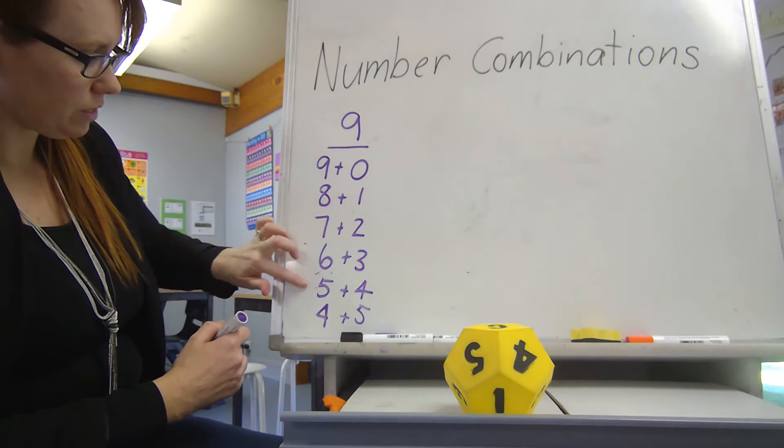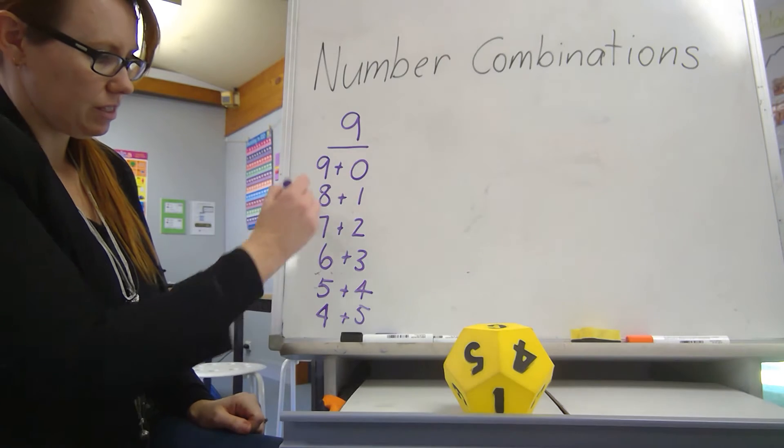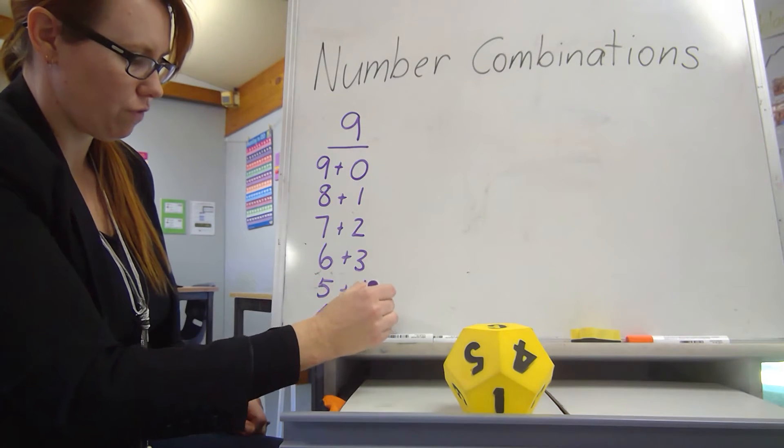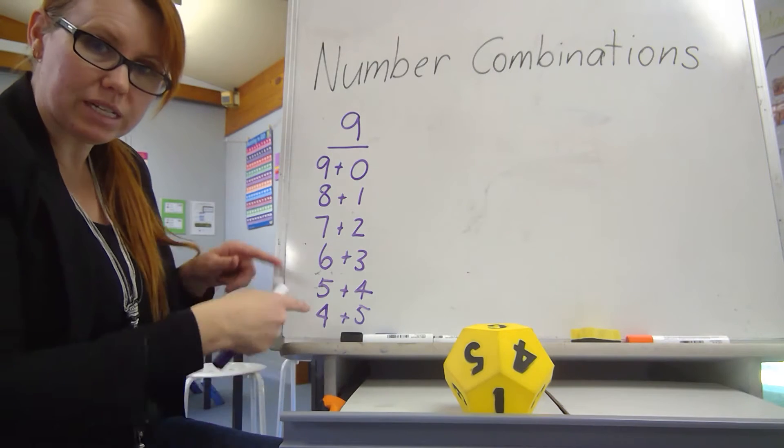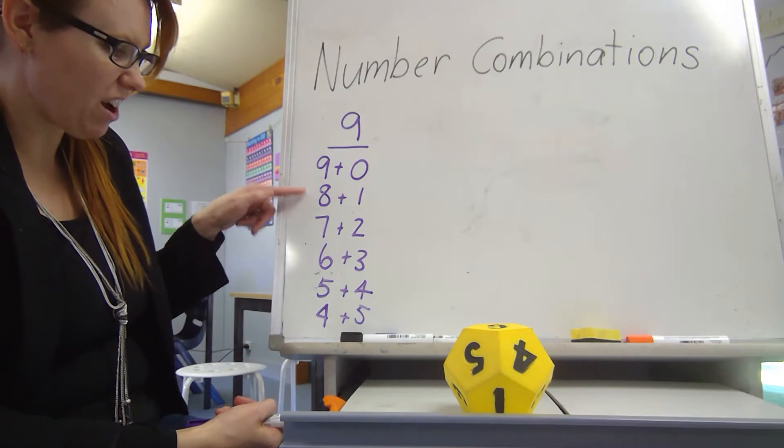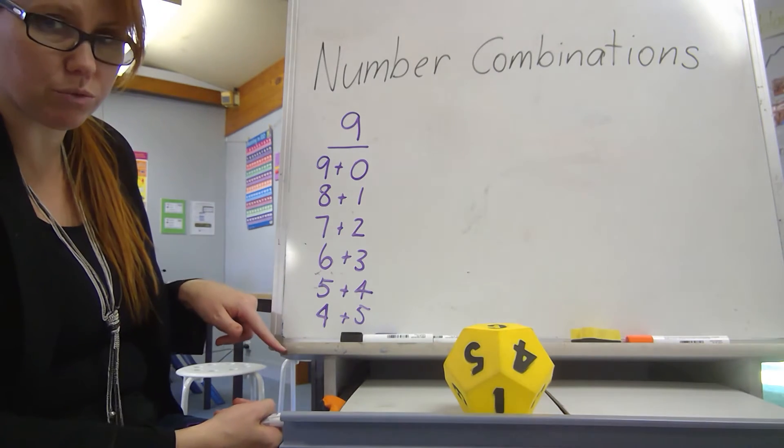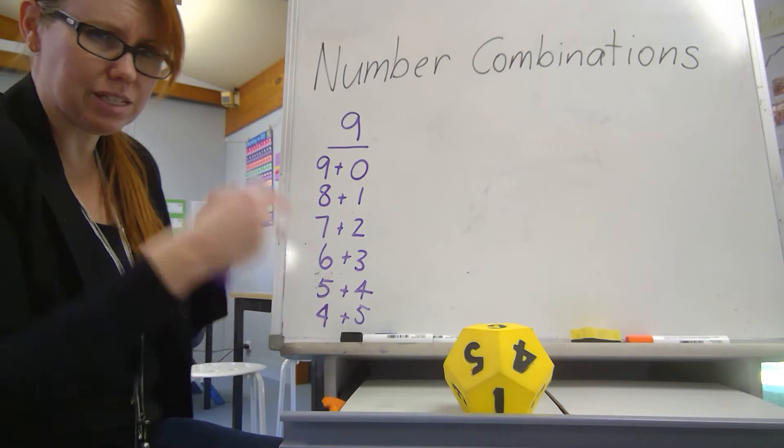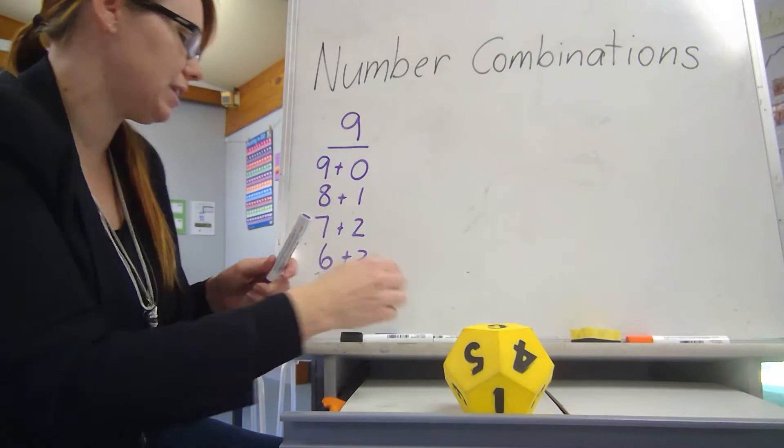9, 8, 7, 6, 5, 4. As this goes down, this one goes up. 0, 1, 2, 3, 4, 5. If I kept going to the next one, what do you think this next one underneath here would be? If I'm going 9, 8, 7, 6, 5, 4, it would be 3 plus 1, 2, 3, 4, 5, 6. This is why maths is awesome. There's patterns everywhere.